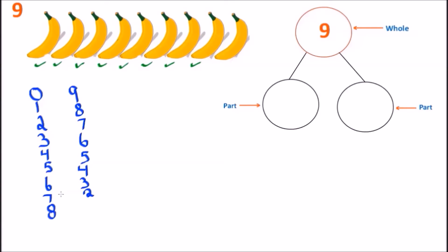Keep counting: one, two, three, four, five, six, seven, and eight — we have eight bananas. How many are remaining? We have one. Before we had one and eight; now we have eight on the left side and one on the right side. Again, two different number bonds but they both equal the number nine. Eight and one — two parts that make up the whole, which is the number nine.